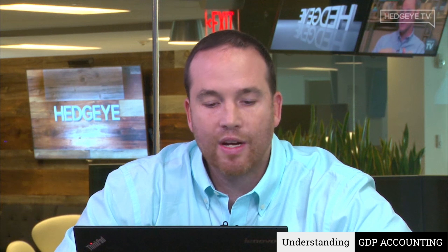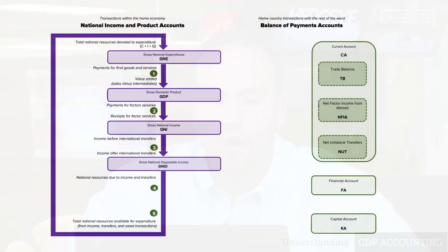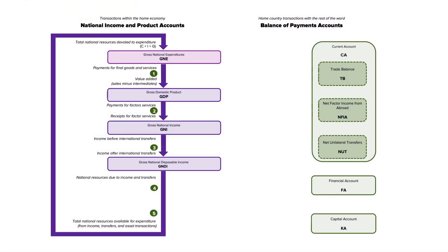Our starting point is, again, gross national expenditure, and we'll work our way down to GNDI — that's gross national disposable income — which represents aggregate net income, which in turn becomes what the country in aggregate can use for expenditures or towards investment. So we're starting at gross national expenditure, GNE, at the top of the flowchart.